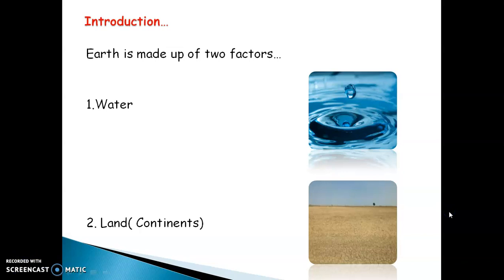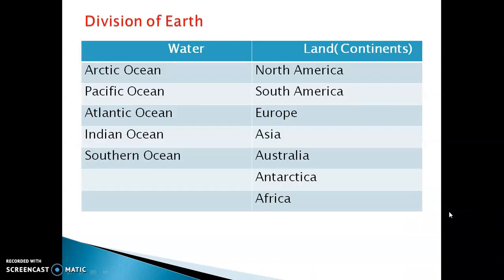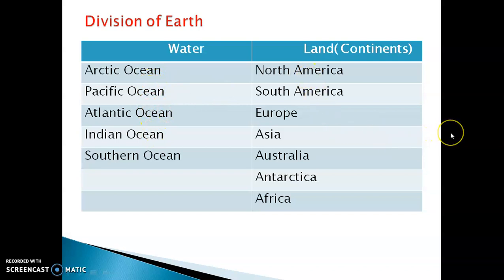Let us now learn the names of the various oceans and continents of the world. There are five important oceans on the Earth: the Arctic Ocean, Pacific Ocean, Atlantic Ocean, Indian Ocean, and Southern Ocean. Whereas there are seven continents on the Earth: North America, South America, Europe, Asia, Australia, Antarctica, and Africa. You have to remember the names of the oceans as well as the continents — five oceans and seven continents.